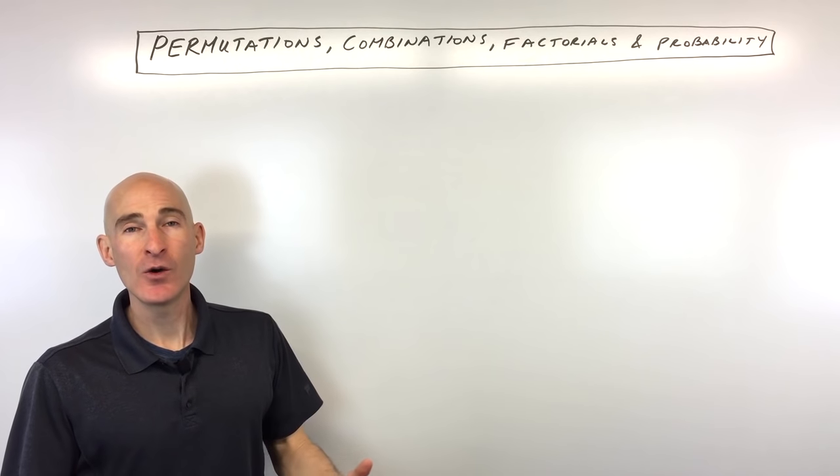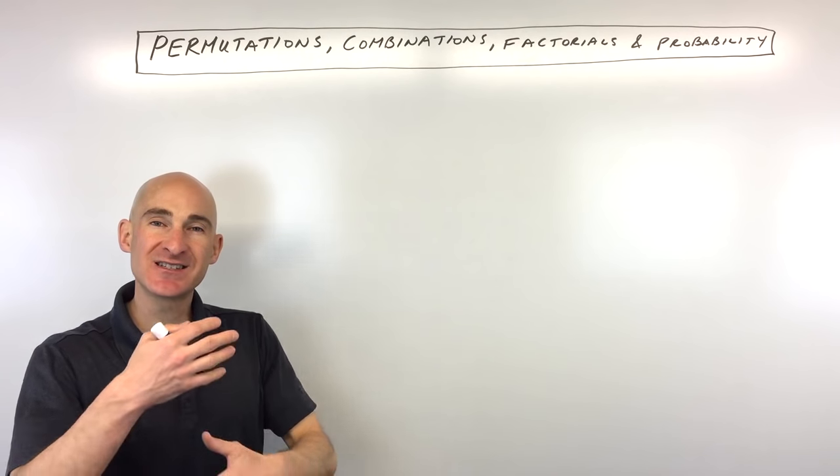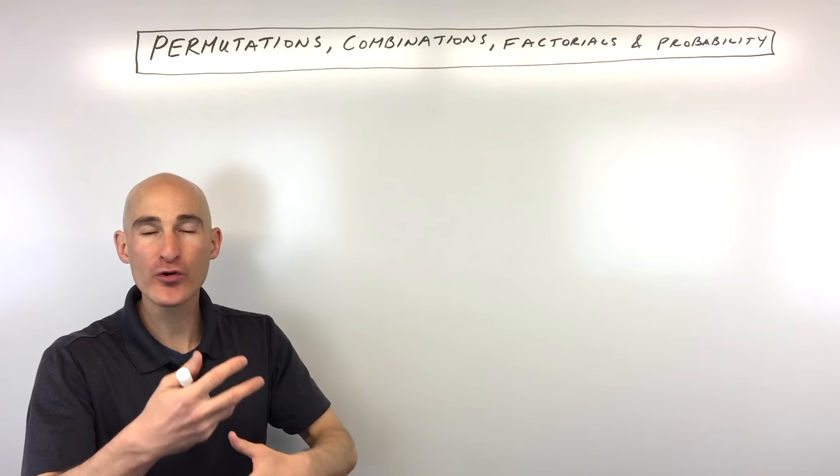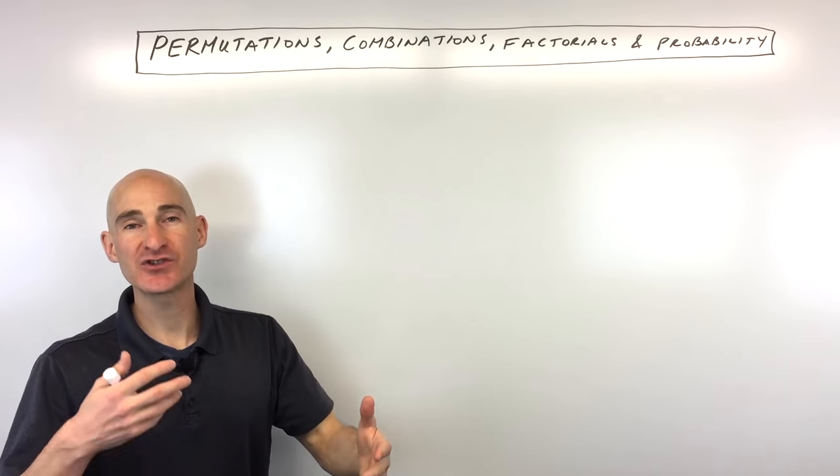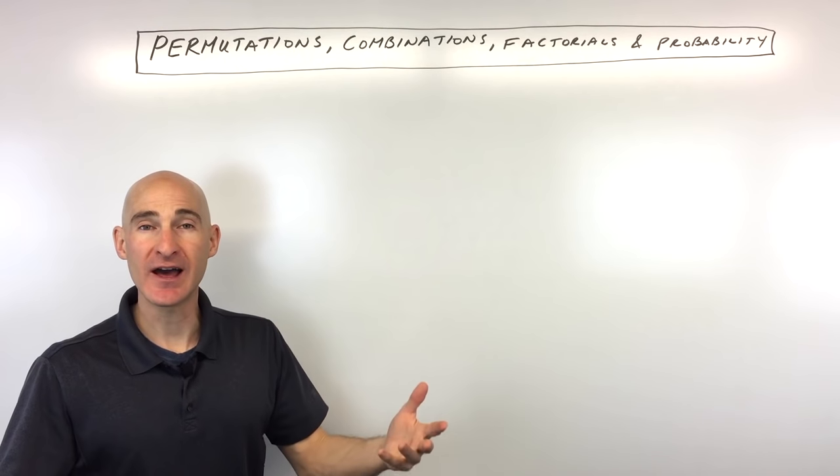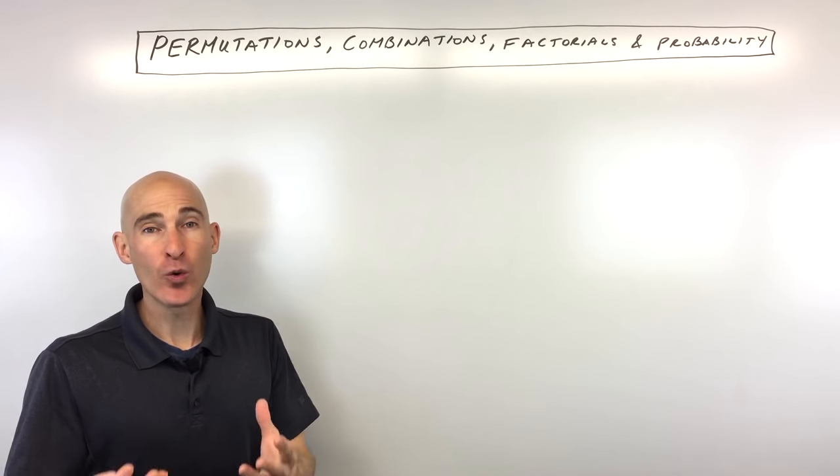What exactly is a permutation? A permutation is essentially an ordering of objects, items, or letters. It's an ordering.